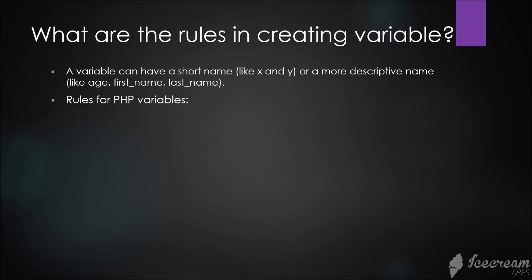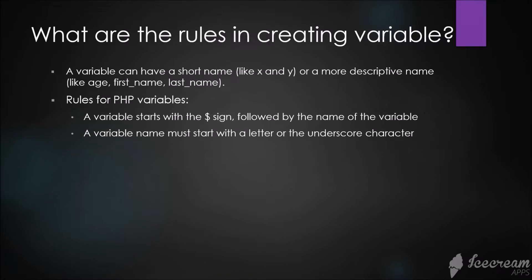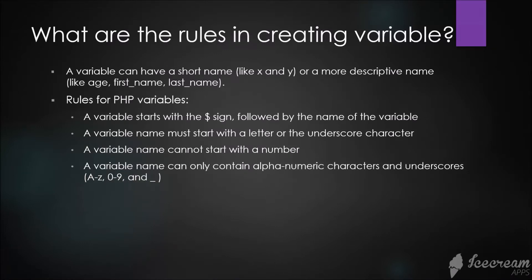Rules for PHP variables: a variable starts with the dollar sign followed by the name of the variable. A variable name must start with a letter or the underscore character. A variable name cannot start with a number. A variable name can only contain alphanumeric characters and underscores.